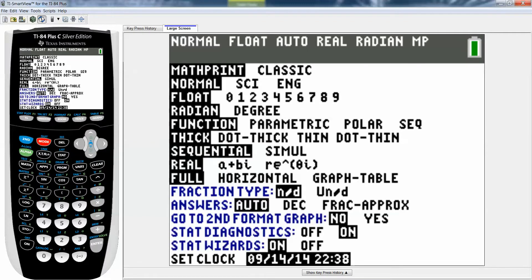The other way to do it is if you hit the mode button. Down at the very bottom it says stats diagnostics. See how it's off and then it's on? Because I just turned them on, it's on.